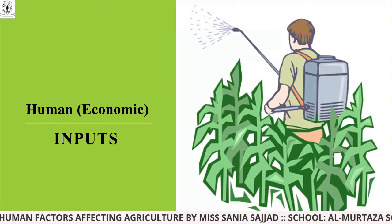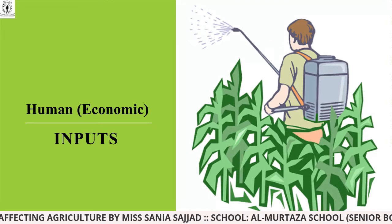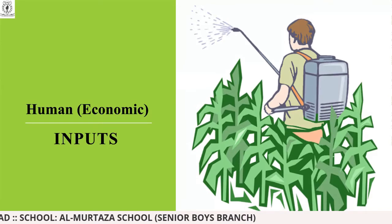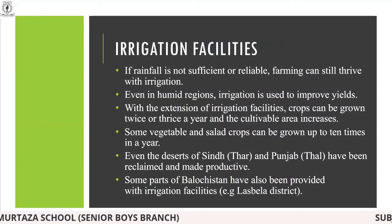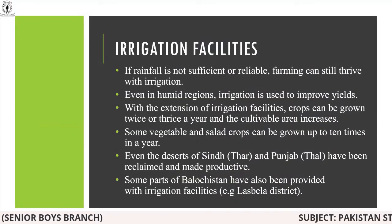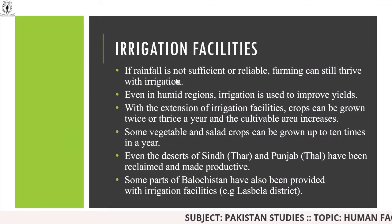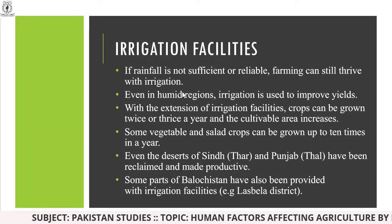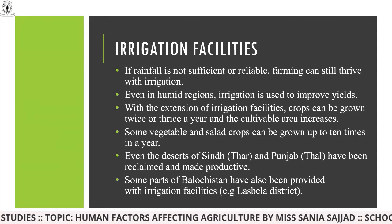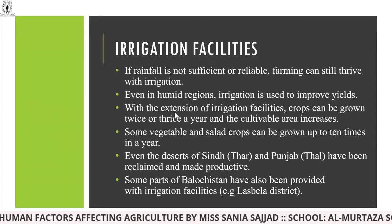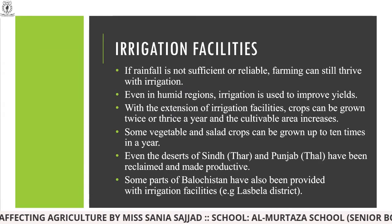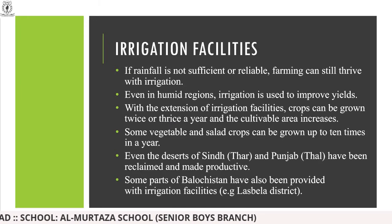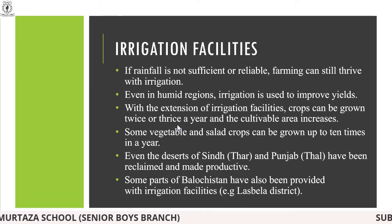Starting with the human and economic input — input basically means that you are putting your input into something and then getting the result. Starting with irrigation facilities: if rainfall is not sufficient or reliable, farming can still thrive with irrigation. Even in humid regions, irrigation is used to improve yields, and with the extension of irrigation facilities, crops can be grown twice or thrice a year, and cultivable areas increase.